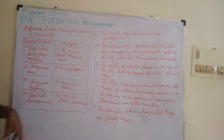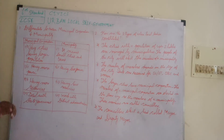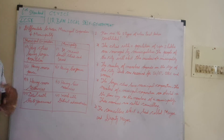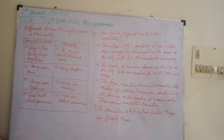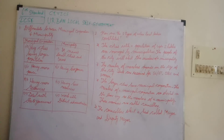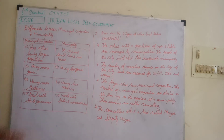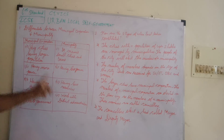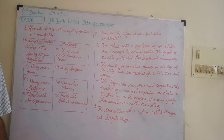Municipal corporation has more resources; municipality has less resources. In a municipal corporation like Trichy, for example, there are 100 wards, with one councillor per ward — so 100 councillors. In a municipality like Perambalur, there will be only 30 to 32 councillors. Government official staff will also be more in a municipal corporation, but only 3 or 4 in a municipality.